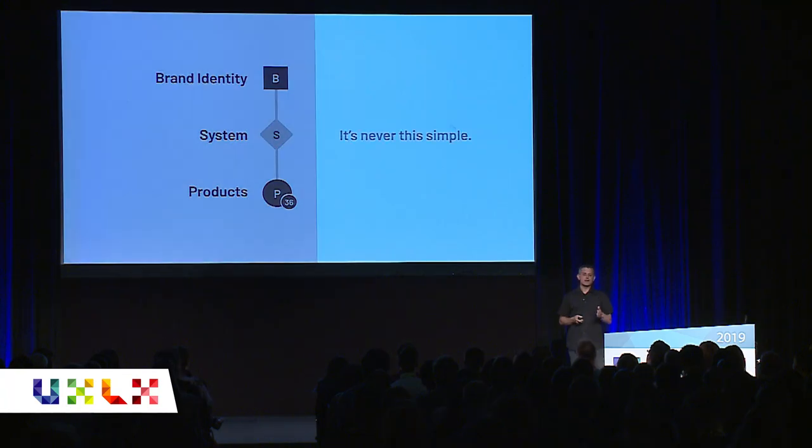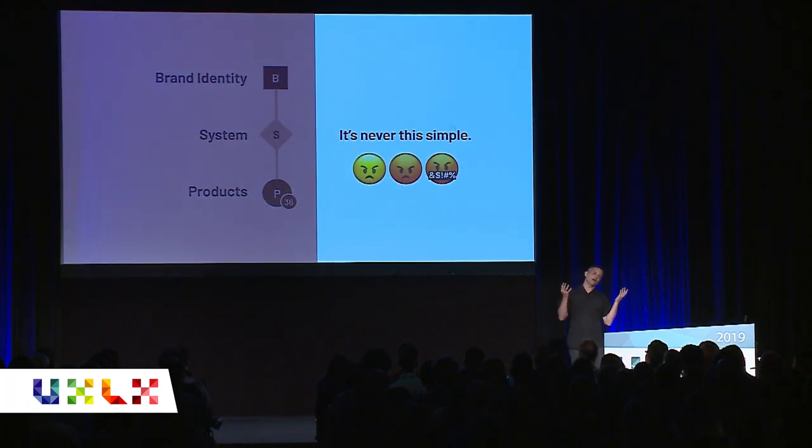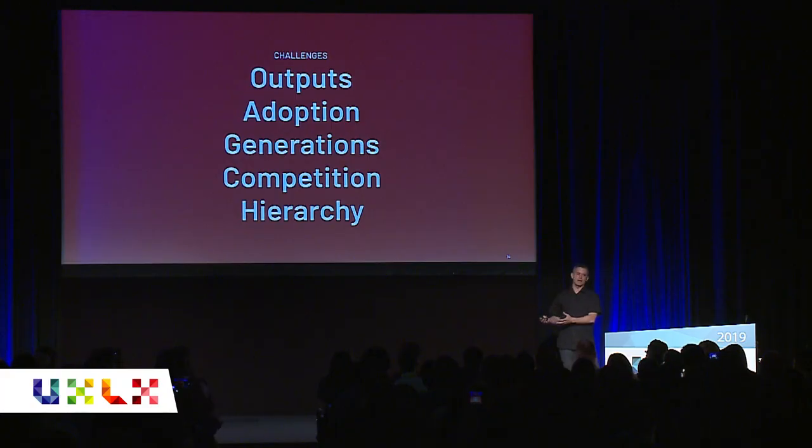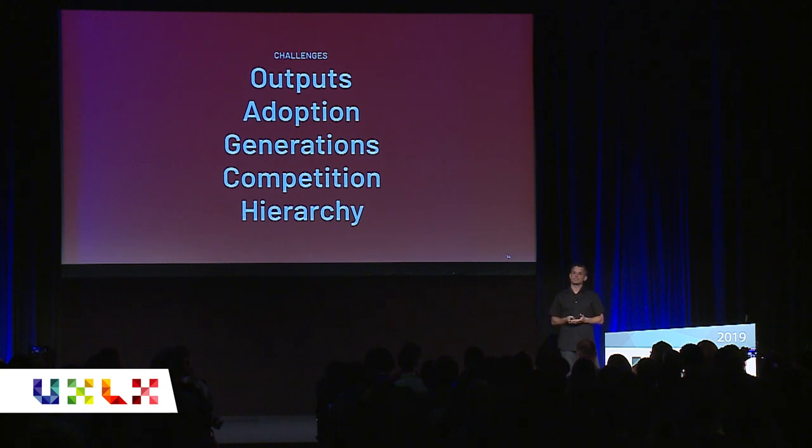We think about systems and think we're at the top of the tree, and then we realize we're not. We depend on brand identity — there might be a group elsewhere that helps us understand how to apply color, typography, a logo mark, and other simple principles because they're applying those across lots of other places too. So we're a node in the chain of that dependency. But to our product teams that adopt us, we are the single source of truth. The challenges I'm going to cover involve the outputs we produce, the adoption we seek, the generations over time, ultimately the competition that emerges at scale, and finally the opportunities through the hierarchy of systems that we can create.